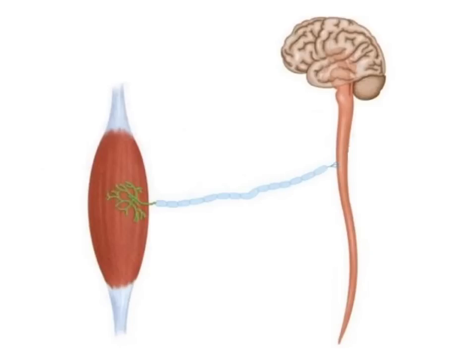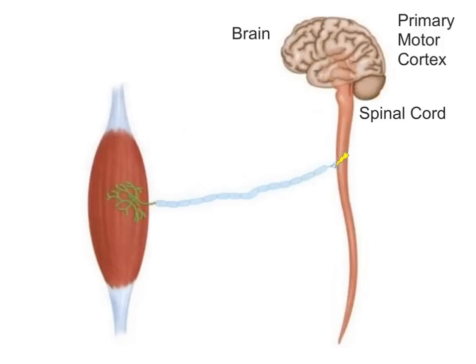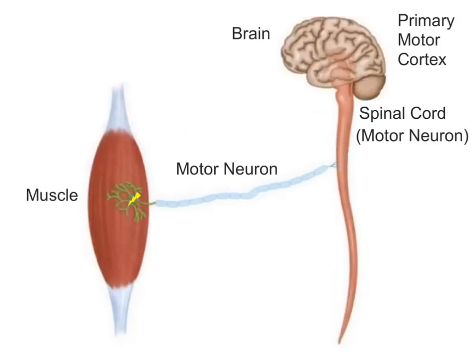So where does this electrical impulse, or action potential, come from? The action potential is initiated in an area in the brain called the primary motor cortex. From the primary motor cortex, the action potential will travel down the spinal cord through a motor neuron. That motor neuron will synapse with another motor neuron from the peripheral nervous system before reaching the muscle. Once at the muscle, the action potential will initiate a cascade of events that causes a muscle contraction.